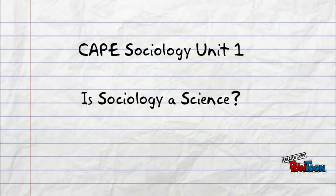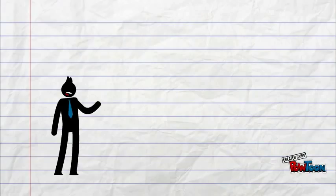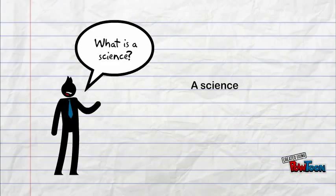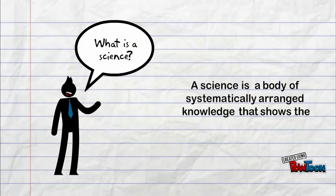Is sociology a science? What is a science? A science is a body of systematically arranged knowledge that shows the operation of general laws.